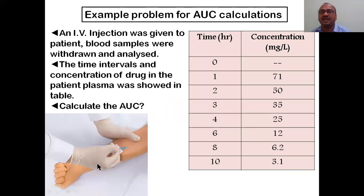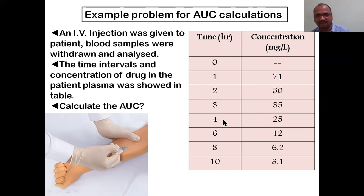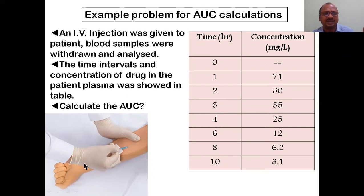Now we will see a practical example. An IV injection was given to a patient, blood samples were withdrawn and analyzed. The time intervals and drug concentration in patient plasma are shown in a table. At time zero they don't know the concentration. After first, second, third, fourth, sixth, eighth, tenth hour the concentration is only decreasing - no increase - because the entire drug was entered at time zero.